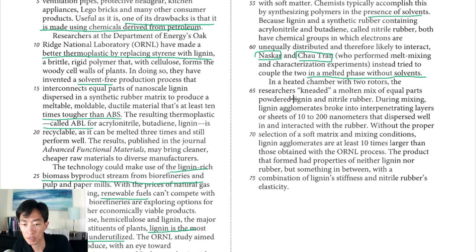So the last paragraph talks in detail about how they combine the two materials. And the result is line 69. Without the proper selection of a soft matrix and mixing conditions, lignin agglomerates are at least 10 times larger than those obtained with the ORNL process. So it looks like they were able to achieve something that was a lot smaller, which I guess is also a lot better. It says the product that formed had properties of neither lignin nor rubber, but something in between with a combination of lignin stiffness and nitrile rubber's elasticity. So it sounds like the result that they got was generally good and that's what they were going for. A lot of technical details in this passage.